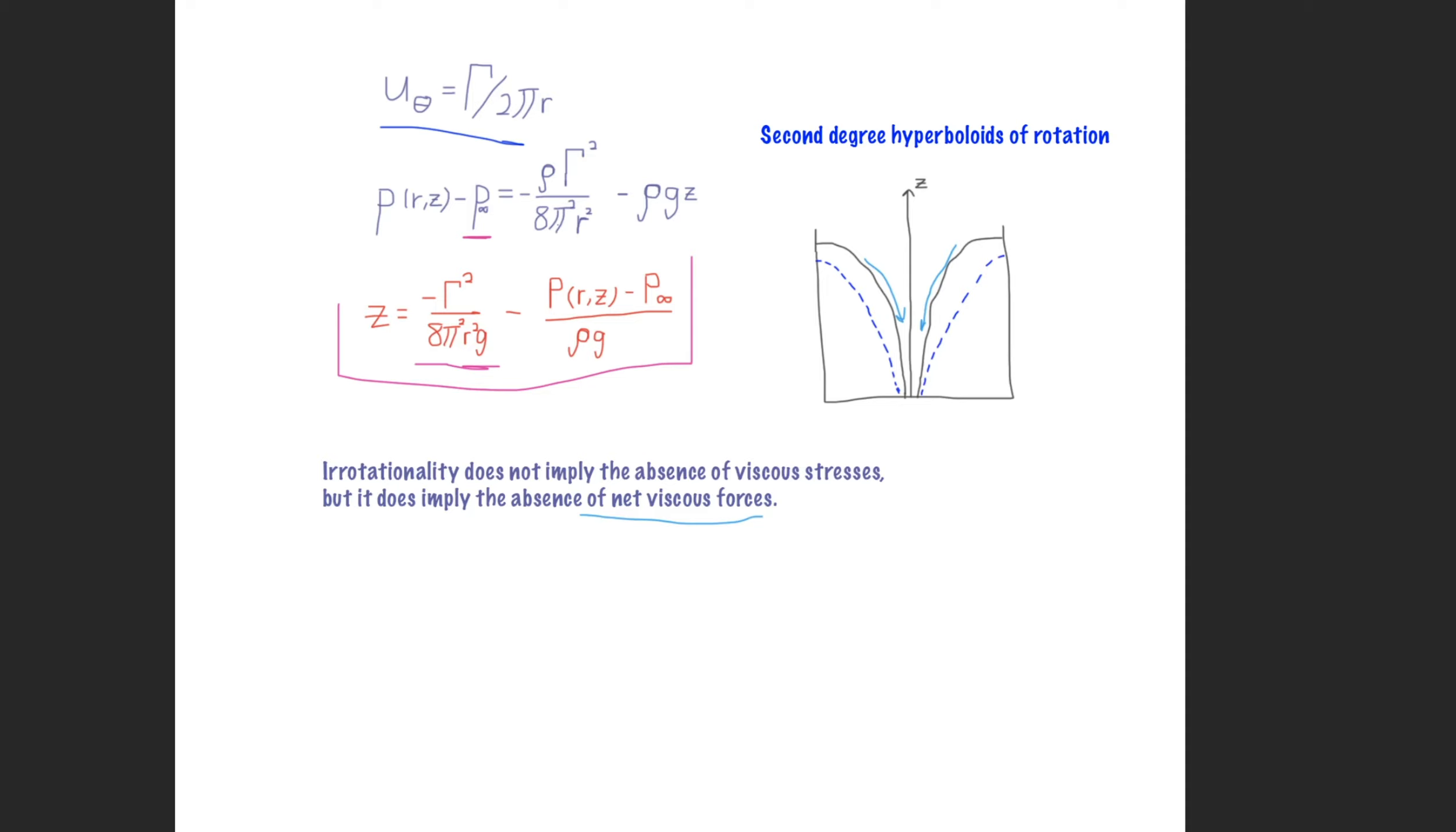Now also we can relate this back to the Bernoulli equations, the Bernoulli function, because we can note that in the solid state example, the Bernoulli function is not constant for points on different streamlines because that flow is rotational. Where in the irrotational example, the Bernoulli function is applicable between any two points in the flow field.